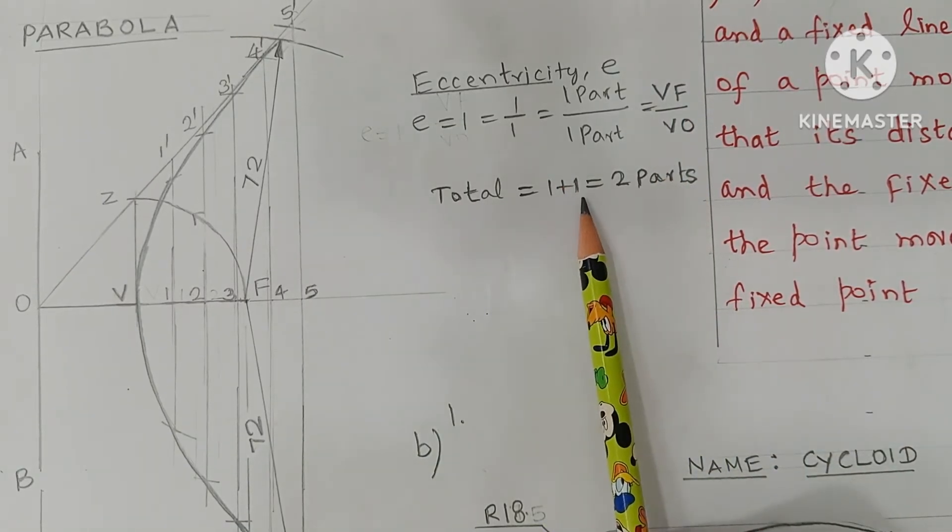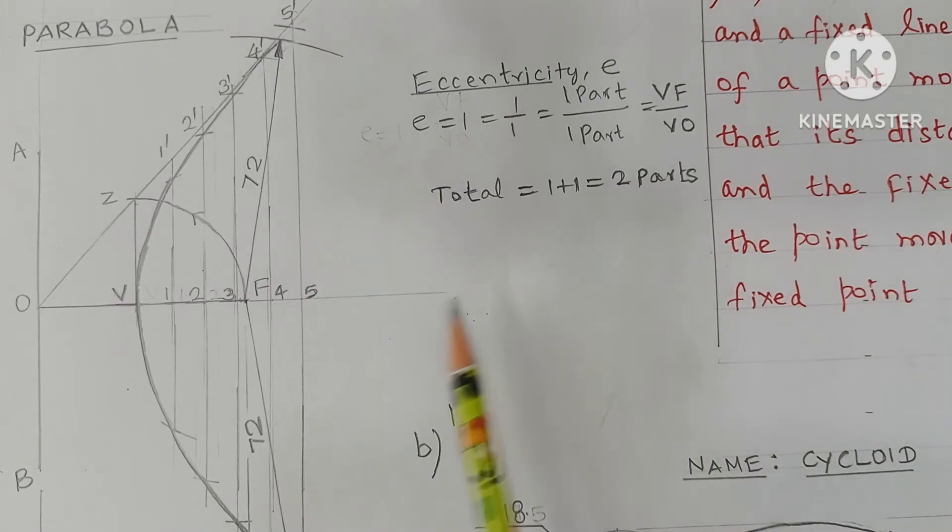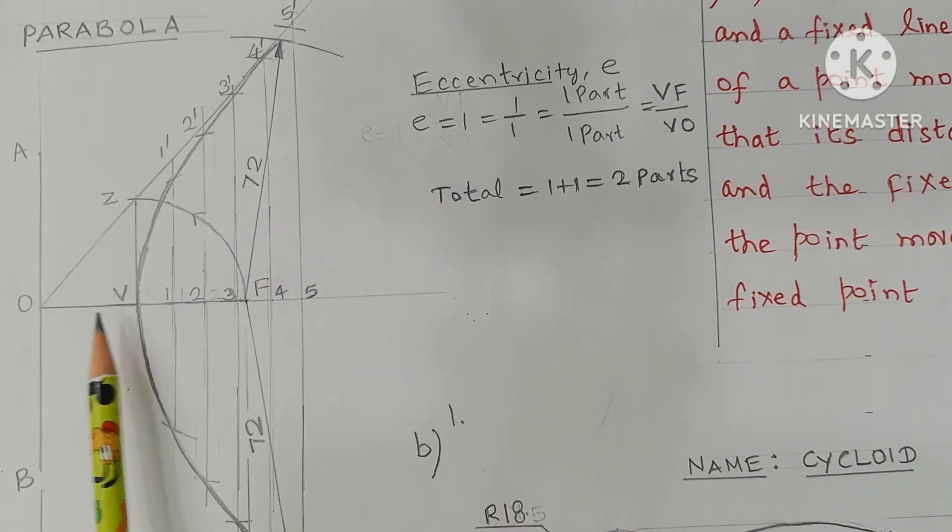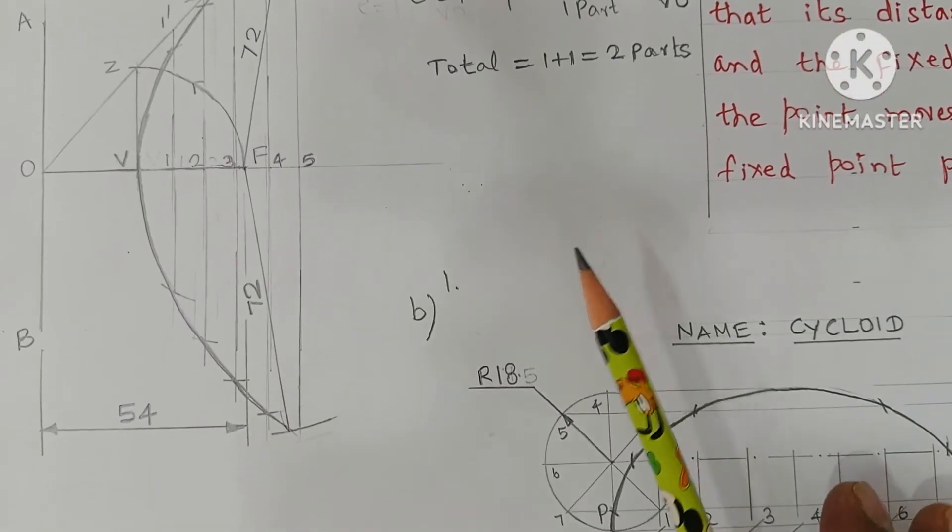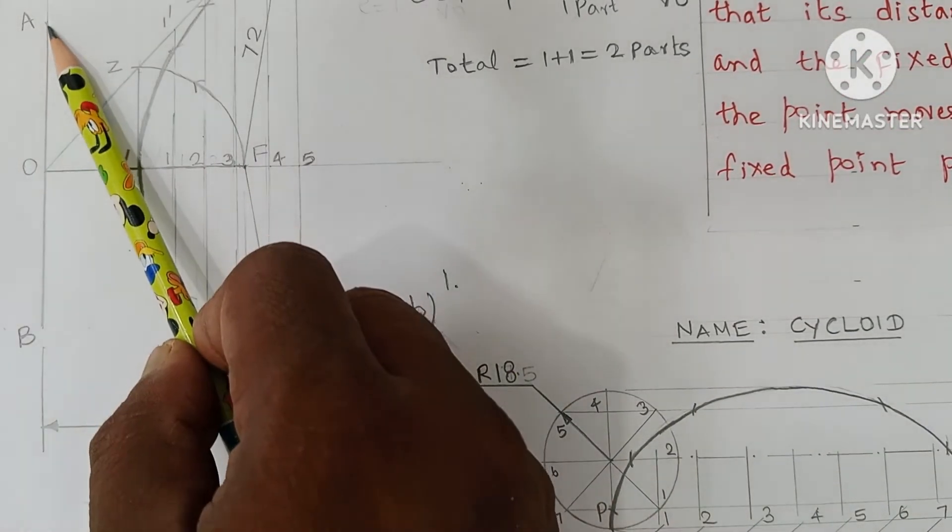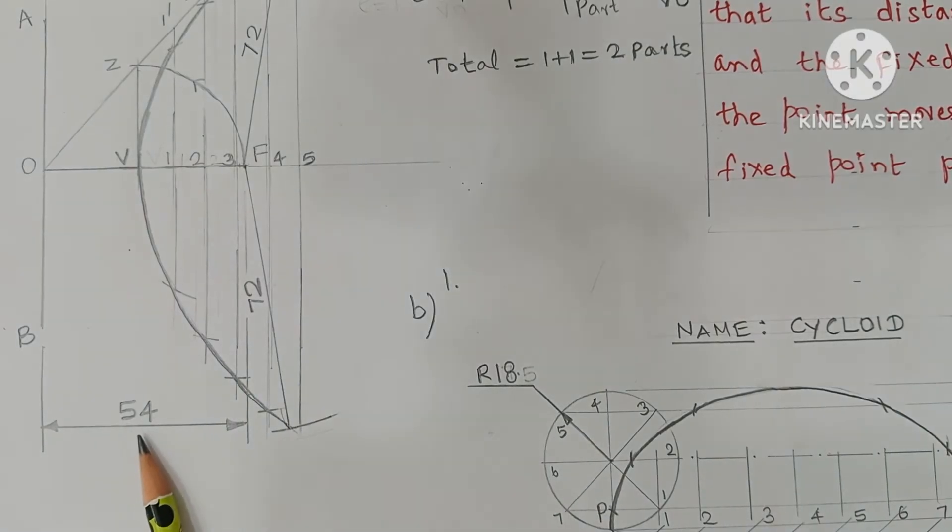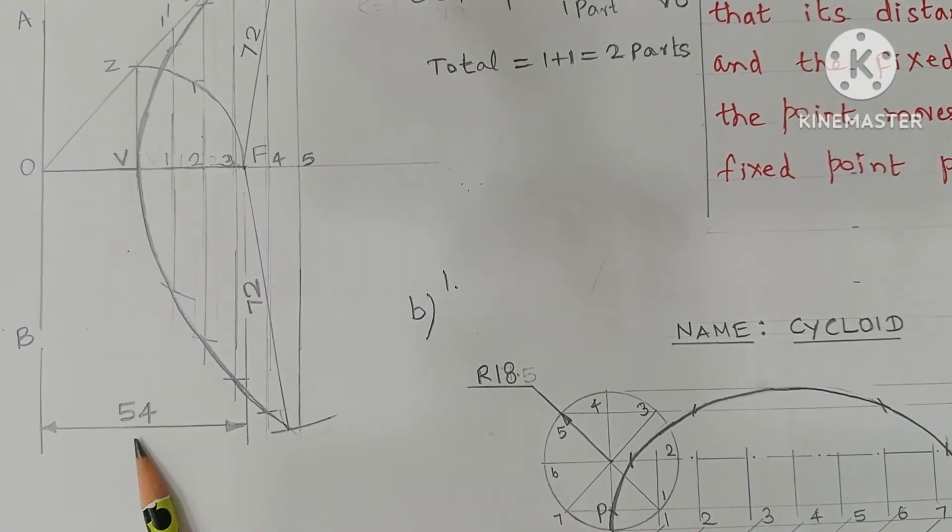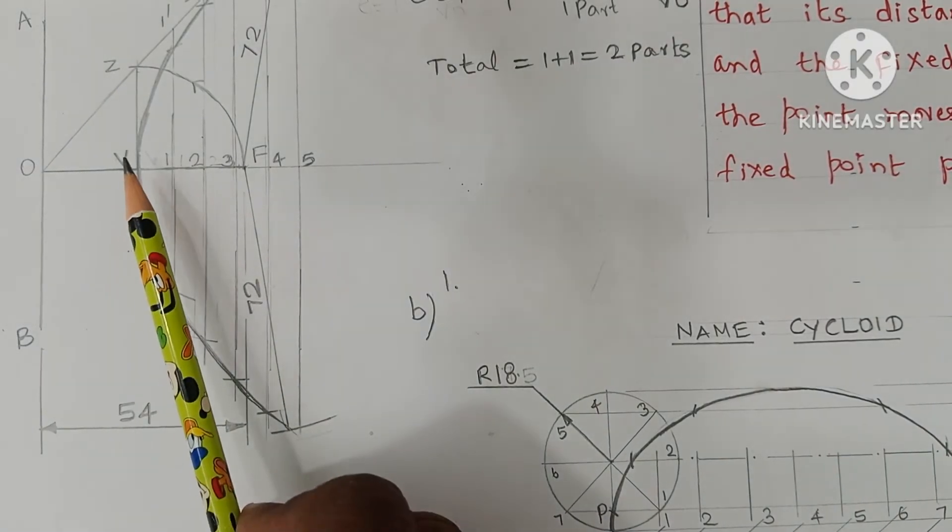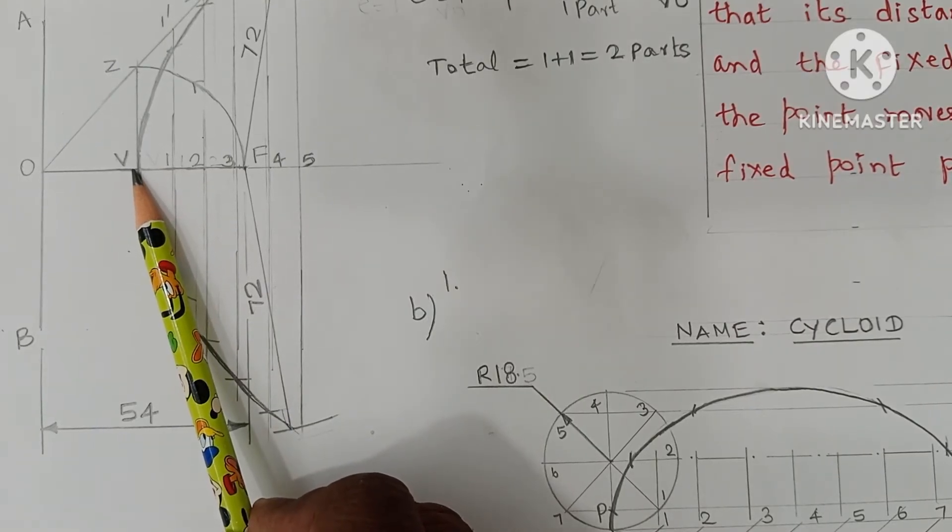So one part by one part is equal to VF by VO, the ratio. Total, adding the numerator and denominator, we get this as two parts. So in OF, two equal parts are there. The distance of focus from the fixed point focus and the fixed directrix is 54 mm. The 54 mm divided by 2, 27 mm is where V point called vertex is located.